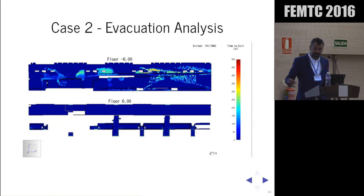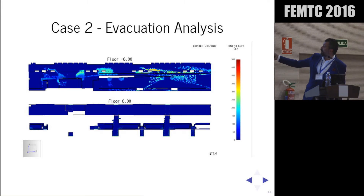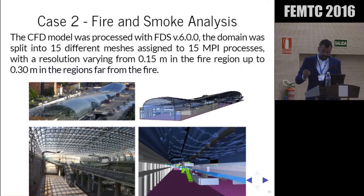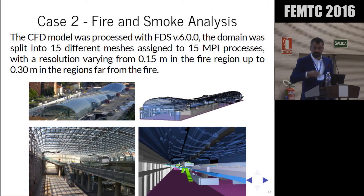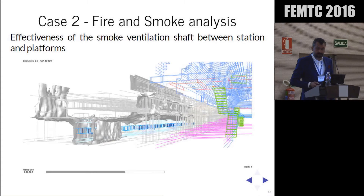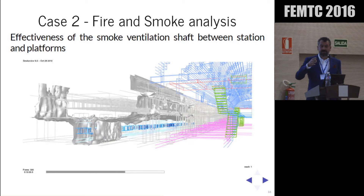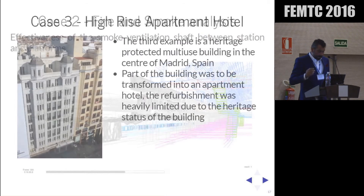For the evacuation analysis, we looked at the current configuration and optimized all exits — there were issues with a big ramp and people being redirected from the back of the station. We then compared this with fire smoke modeling. For this large station volume, the FDS model used 15 different meshes ranging from 0.15 to 0.3 meters. The results showed people could achieve safe conditions, and crucially, there were shafts between the station and the tunnel — most of the smoke escaped through these natural shafts.